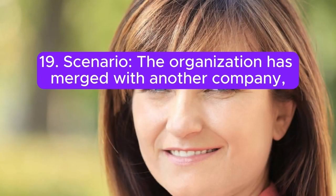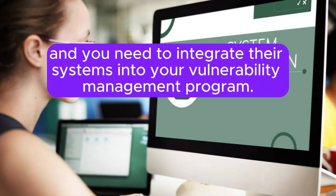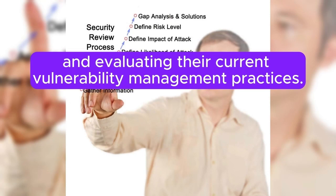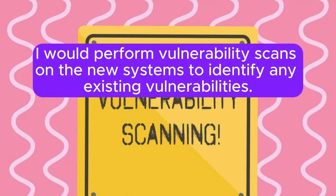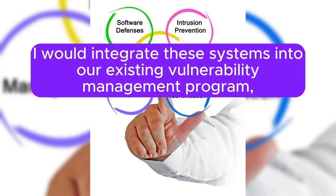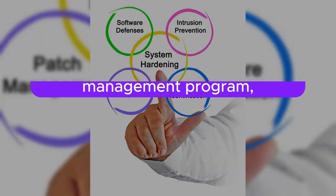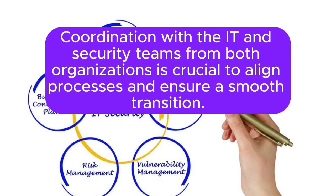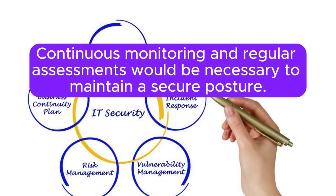Scenario 19: The organization has merged with another company and you need to integrate their systems into your vulnerability management program. What steps do you take? I would start by conducting a comprehensive inventory of the merged company's IT assets and evaluating their current vulnerability management practices. I would perform vulnerability scans on the new systems to identify any existing vulnerabilities, and integrate these systems into our existing vulnerability management program, ensuring that they follow the same standards and procedures. Coordination with the IT and security teams from both organizations is crucial to align processes and ensure a smooth transition. Continuous monitoring and regular assessments would be necessary to maintain a secure posture.